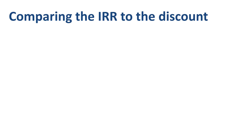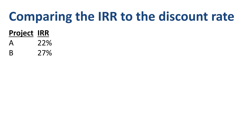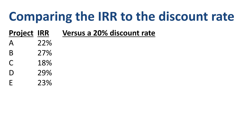We have looked at Project A in isolation, but there are four other projects competing for the same investment money. Project B has an IRR of 27%, Project C an IRR of 18%, Project D an IRR of 29%, and Project E an IRR of 23%. Comparing each with the discount rate of 20%, Project A is 2 percentage points above the discount rate, and Project B is 7 percentage points above the discount rate.